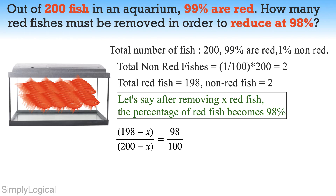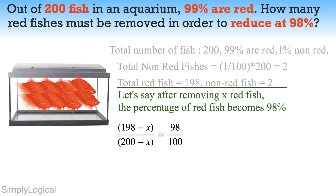198 minus x represents the number of red fish in the aquarium after removing x red fish. 200 minus x represents the total number of fish remaining in the aquarium, which includes non-red fish as well. The right-hand side represents the percentage we need to achieve. So, let's solve this equation.